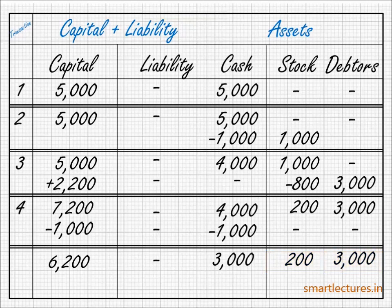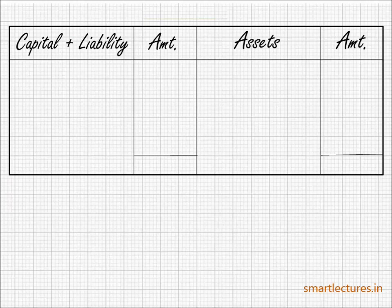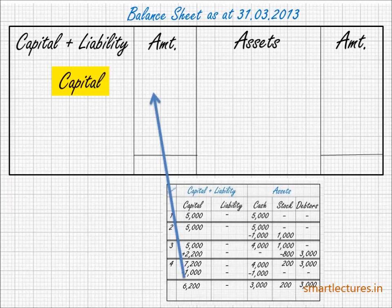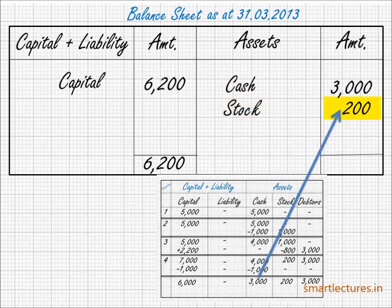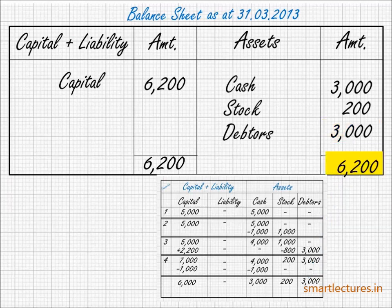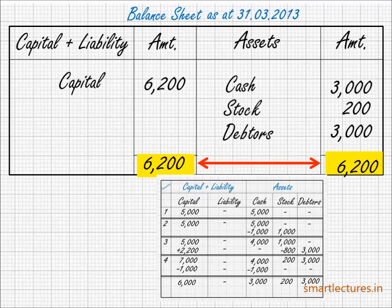The last equation can be converted into a balance sheet. Draw the format of the balance sheet and on the top write: Balance Sheet as on 31st March 2013. On the capital plus liability side: capital 6200. On the asset side: cash 3000, stock 200, debtors 3000. The totals on both sides: 6200. The total of a balance sheet should always be equal. If you find that the totals of both sides are not equal, it means you have made some mistake — you must check your question again.